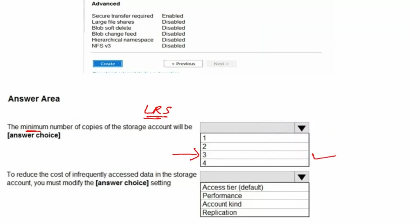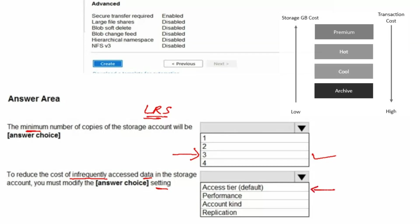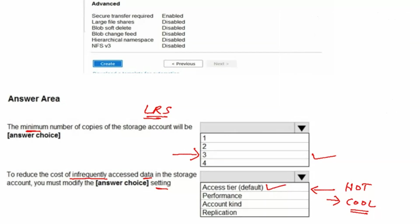The next question is: to reduce the cost of infrequently accessed data in the storage account, you must modify which setting? As we know, the access tier should be modified. Right now we are using hot. We can use cool to reduce the cost of infrequently accessed data. Therefore, the access tier is the correct answer.